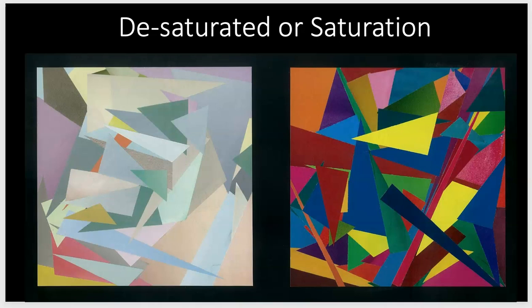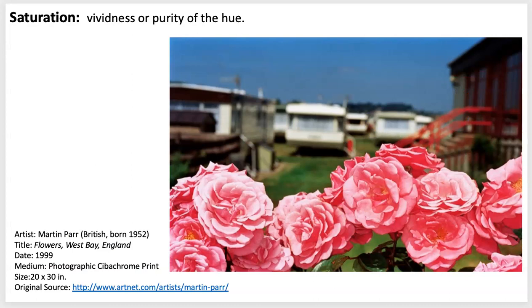Saturation is the vividness or the purity of the hue — it describes the depth or the intensity. Here we have basically the same subject in a desaturated version and a saturated version. Just look at how you quickly respond to these two images: one is very vivid and almost loud — if you were to compare it to music — and then the desaturated image is much more quiet and calming.